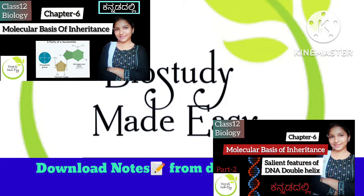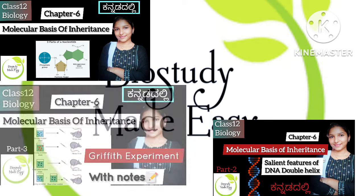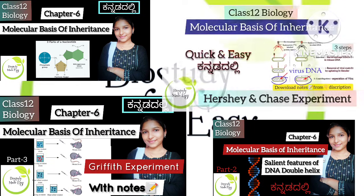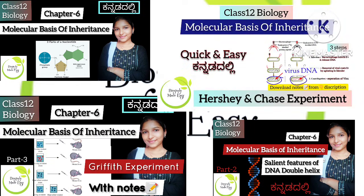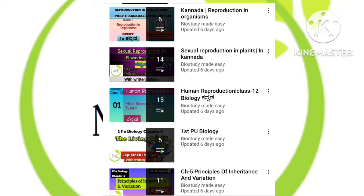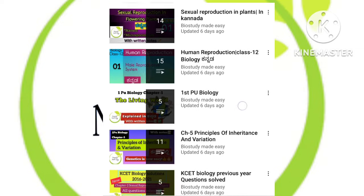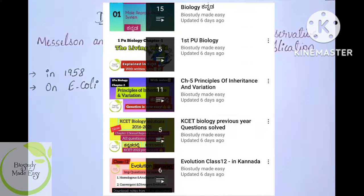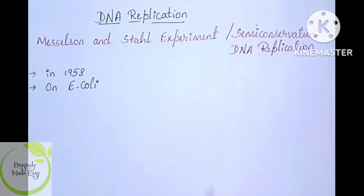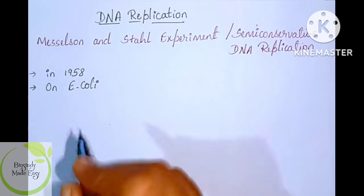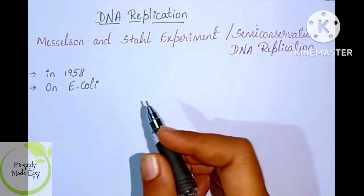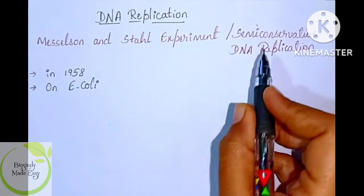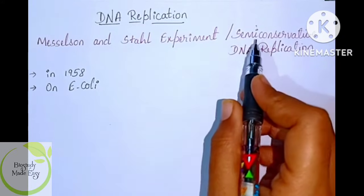Topics include Nucleotide Structure, DNA Structure and Salient Features, Griffith Experiment, and Hershey and Chase Experiment. Matthew Meselson and Franklin Stahl studied how DNA replicates. The conclusion is that DNA replicates in the semi-conservative mode.